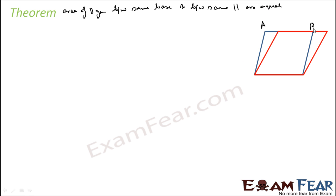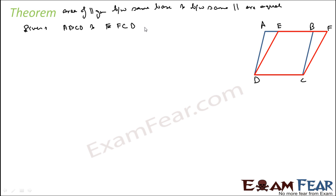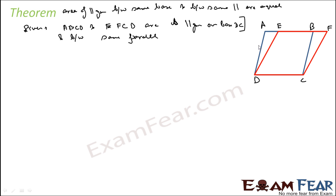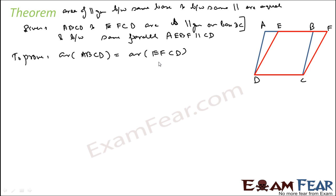Since this is a theorem, we have to prove it. Given that parallelogram ABCD and parallelogram FC are parallelograms on base DC, and they are also between the same parallels — that is by construction. We have to prove that the area of the first parallelogram is equal to the area of the second parallelogram.